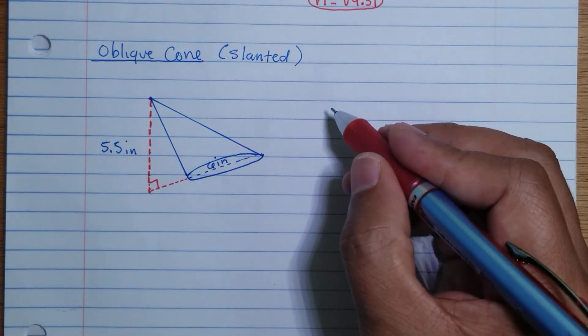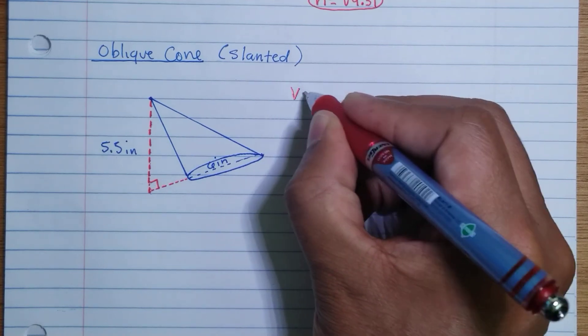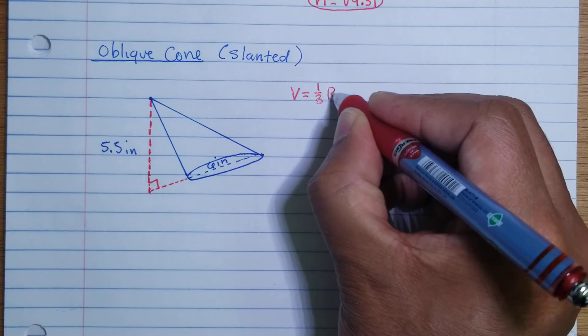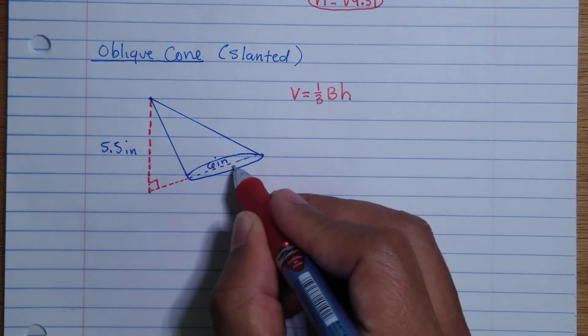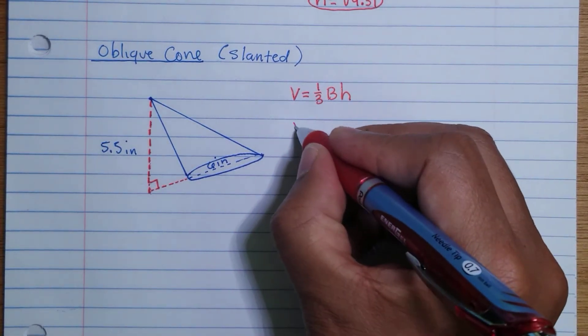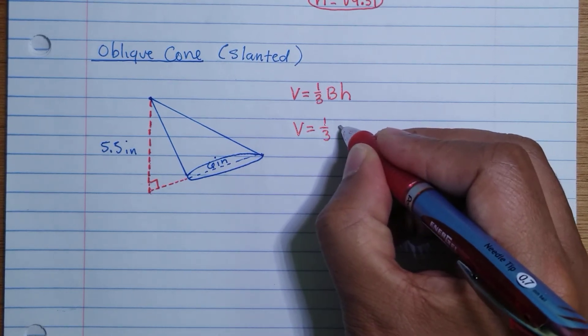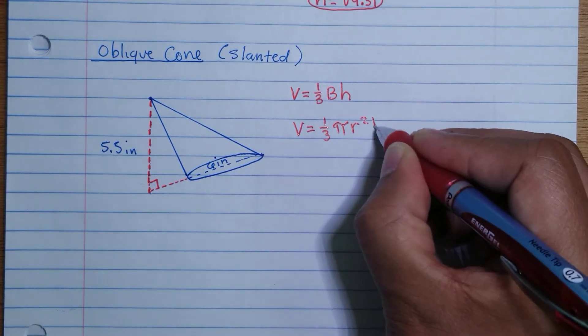I'm just going to substitute everything to the formula. The volume is equal to 1/3 times the base times the height, but the base is a circle, and to find the area of a circle we use πr². So the volume equals 1/3 times π times the radius squared times the height.